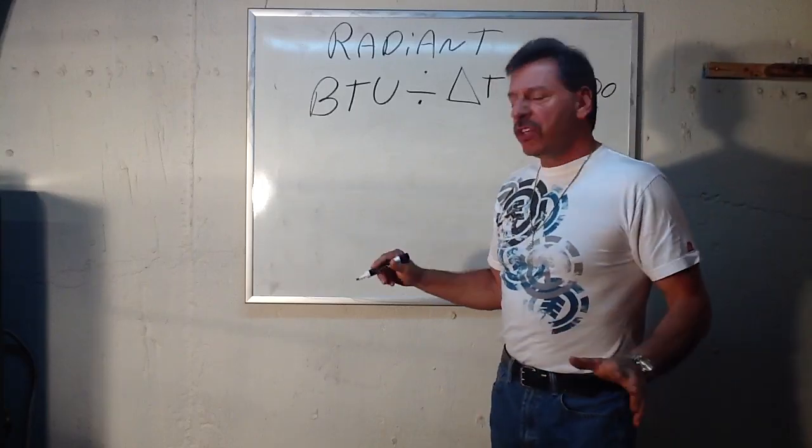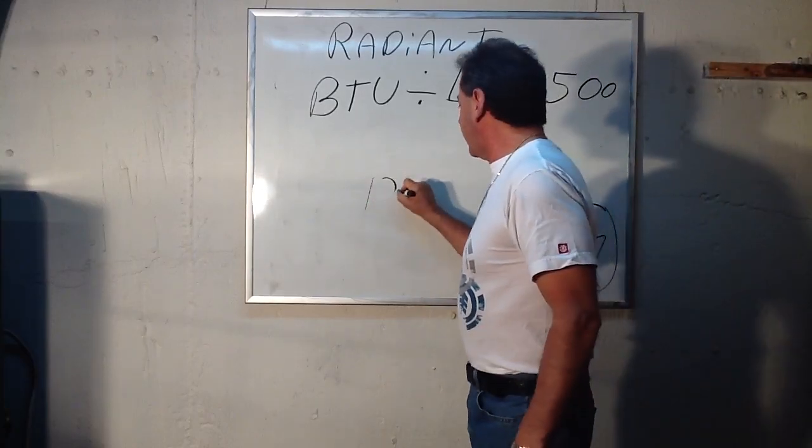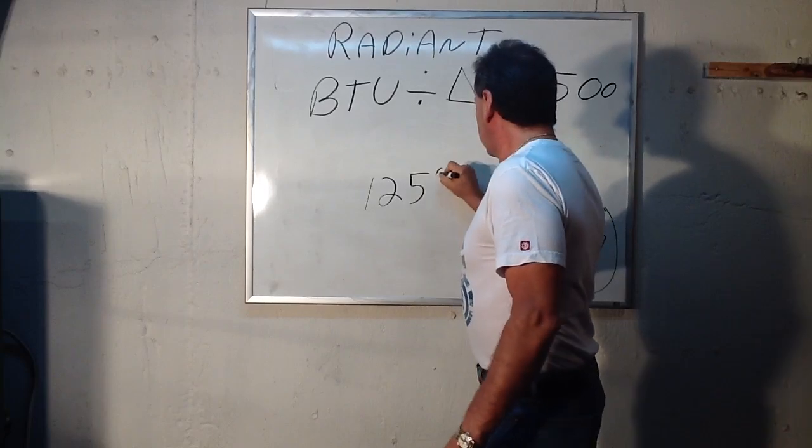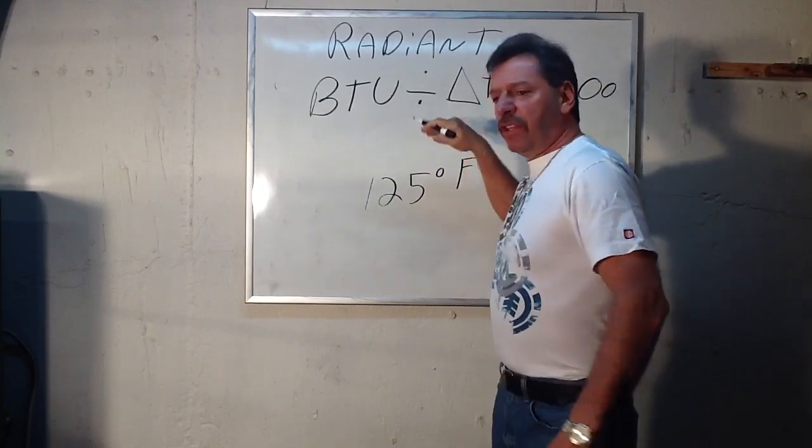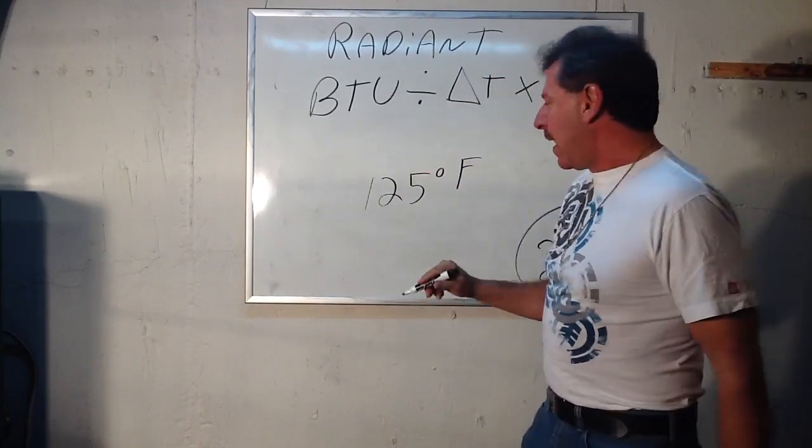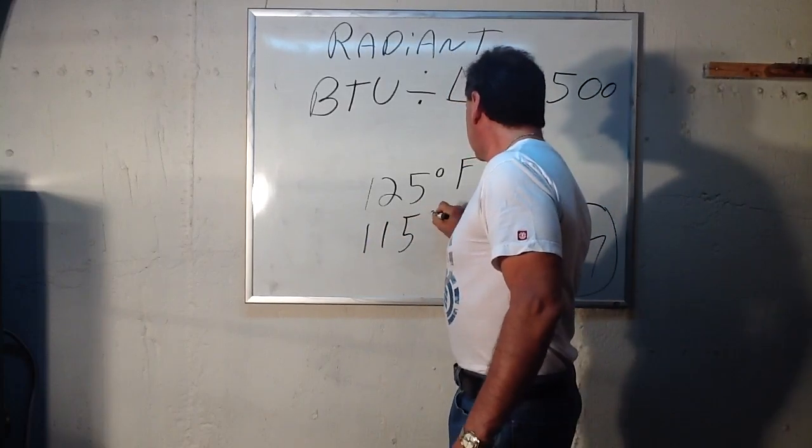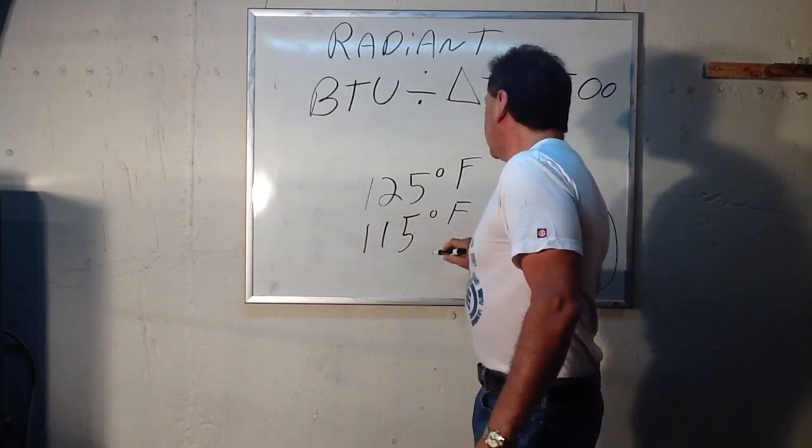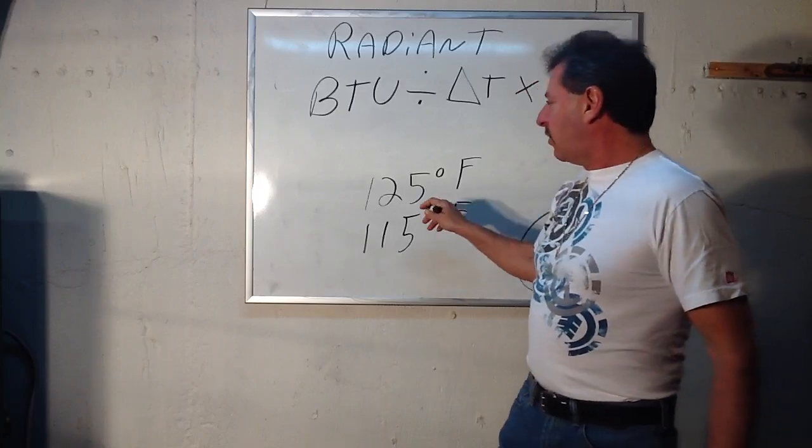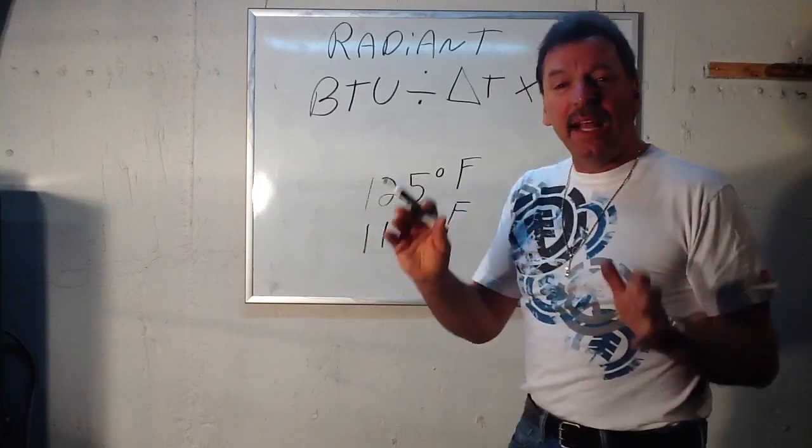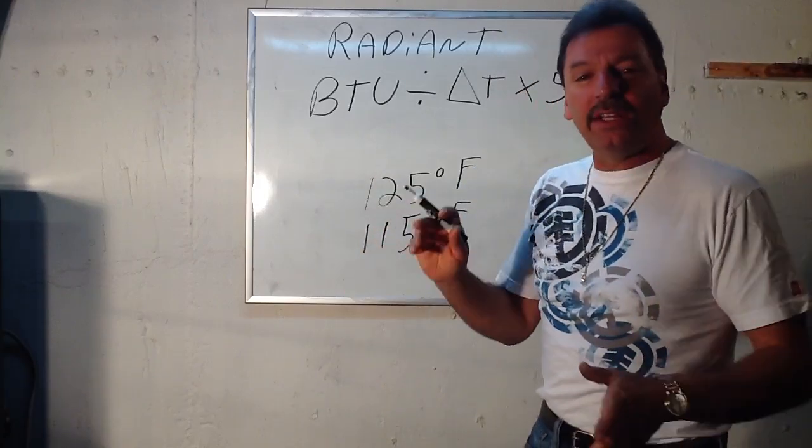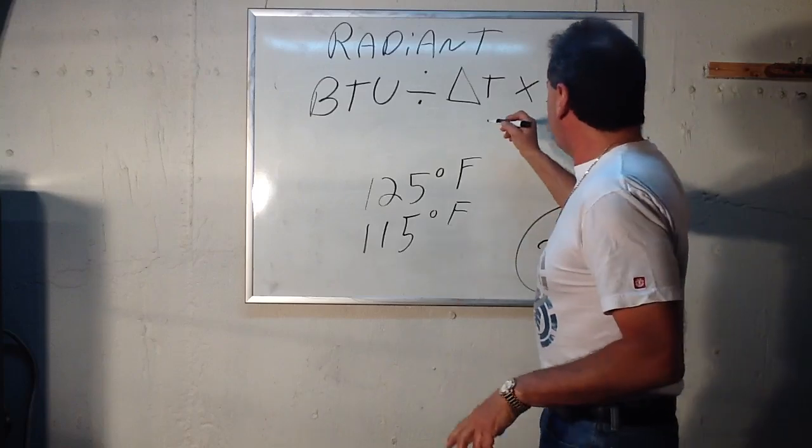Radiant heat leaves at about 125 degrees Fahrenheit and returns to the boiler at about 115 degrees Fahrenheit, so there's a 10 degree Delta T, or a 10 degree difference there. So your Delta T on radiant heat would be 10 instead of 20.